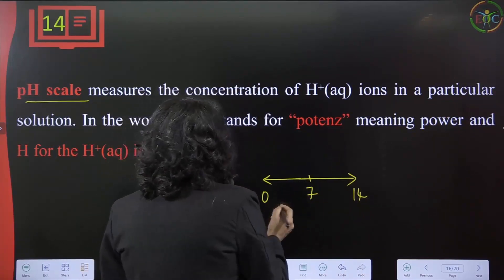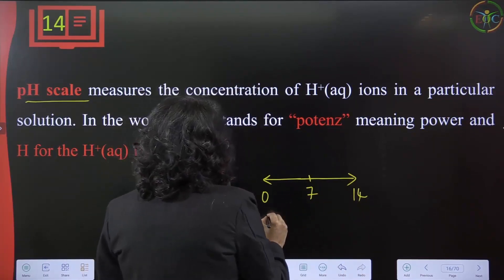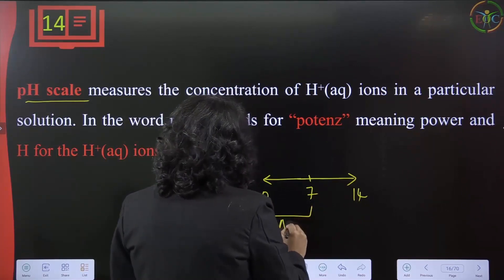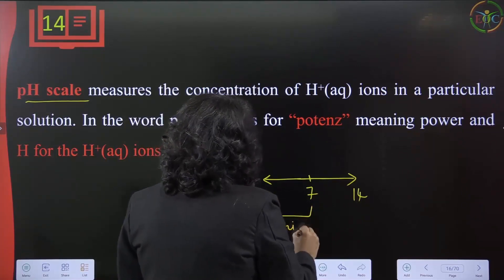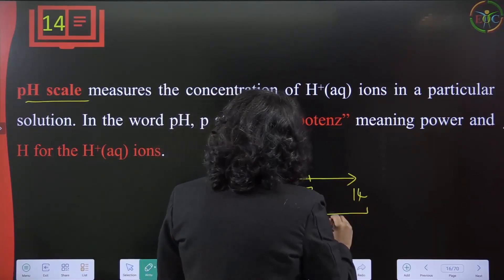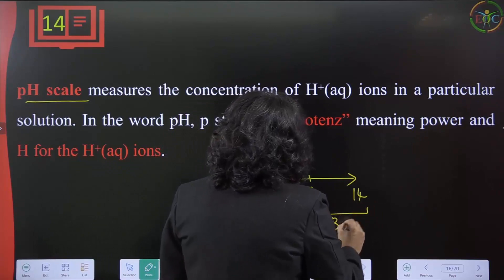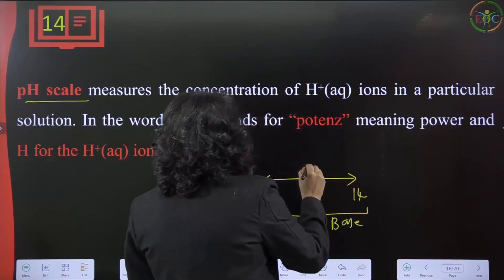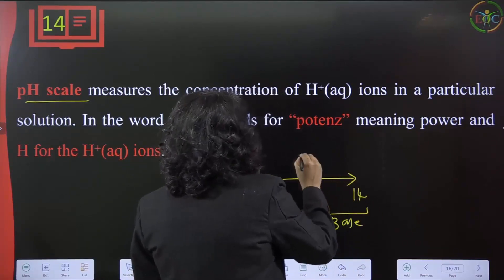Below 7 on the pH scale is the acidic range — substances will be acids. Above 7, substances will be bases. A pH of 7 is neutral.